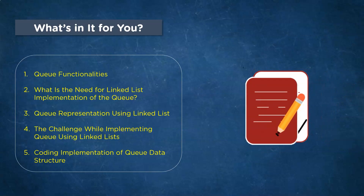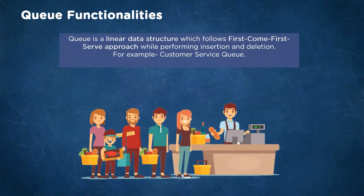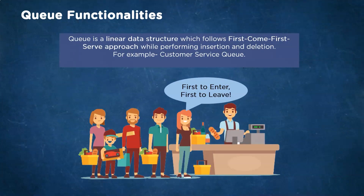Let's get started with our first topic: a quick recap on queue functionalities. Queue, as we know from our previous discussions, is a structure in which whatever goes in first comes out first. For example, in a customer service queue, the customer who enters first will leave the billing line first, and the customer who enters last will get served last. This scenario for insertion and deletion is also known as the first in, first out principle.